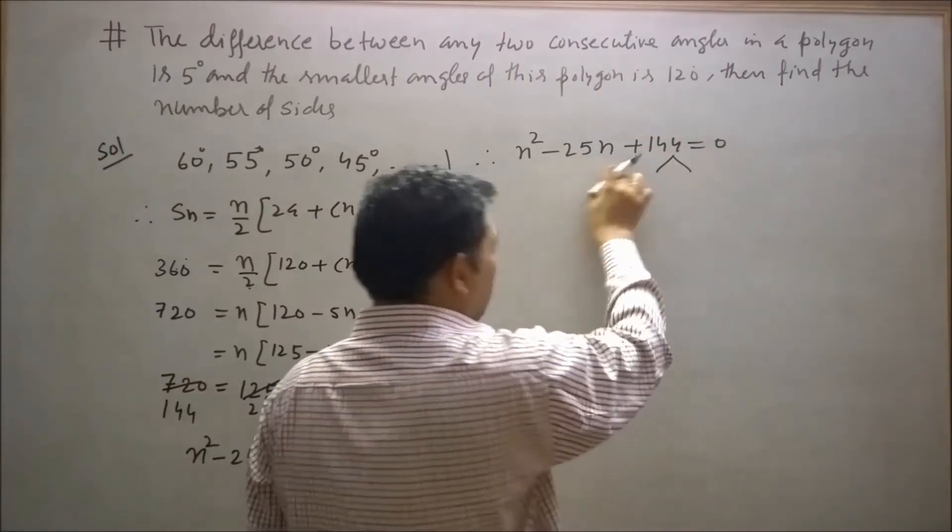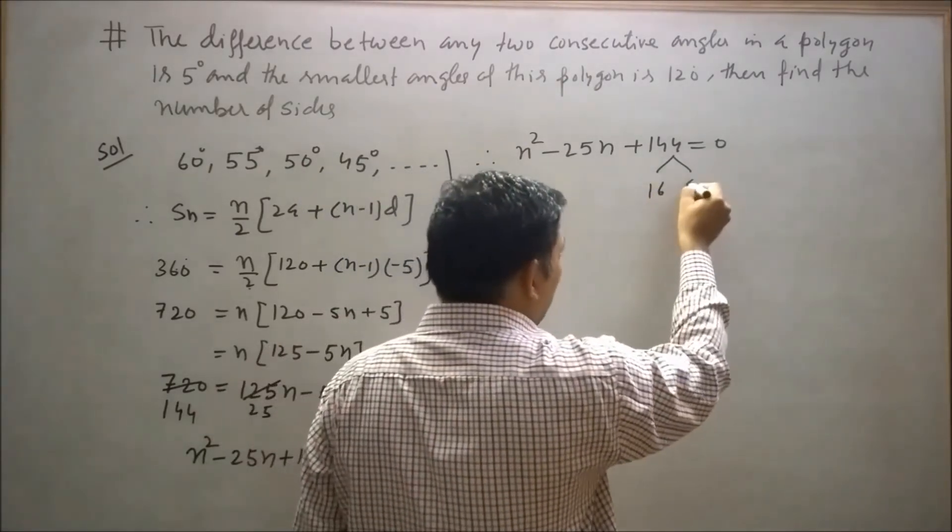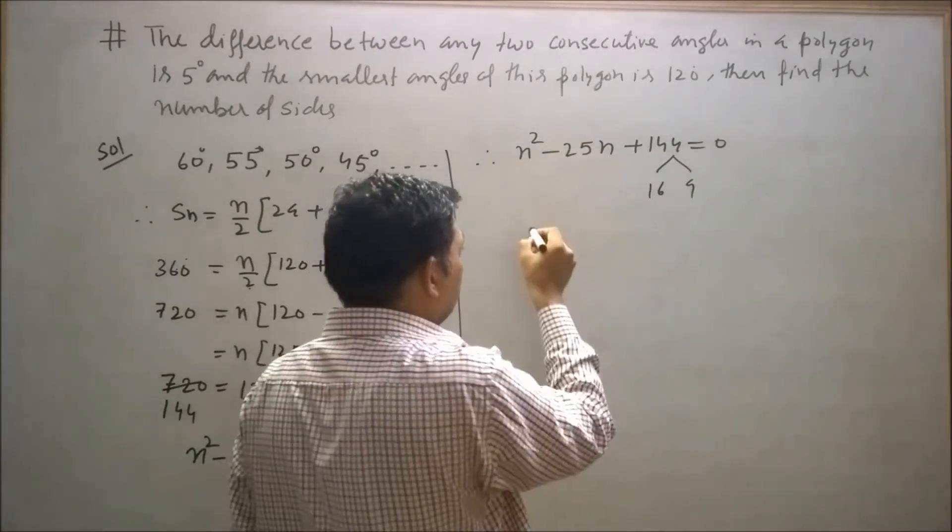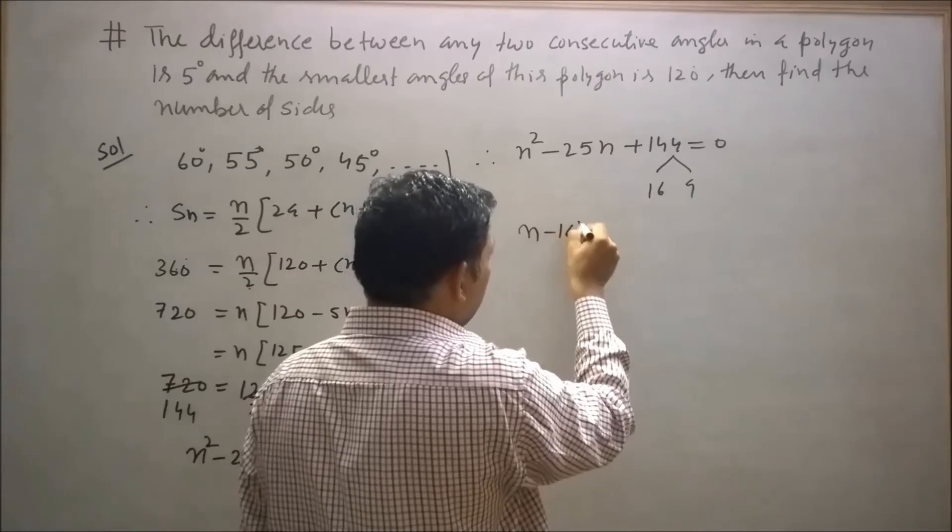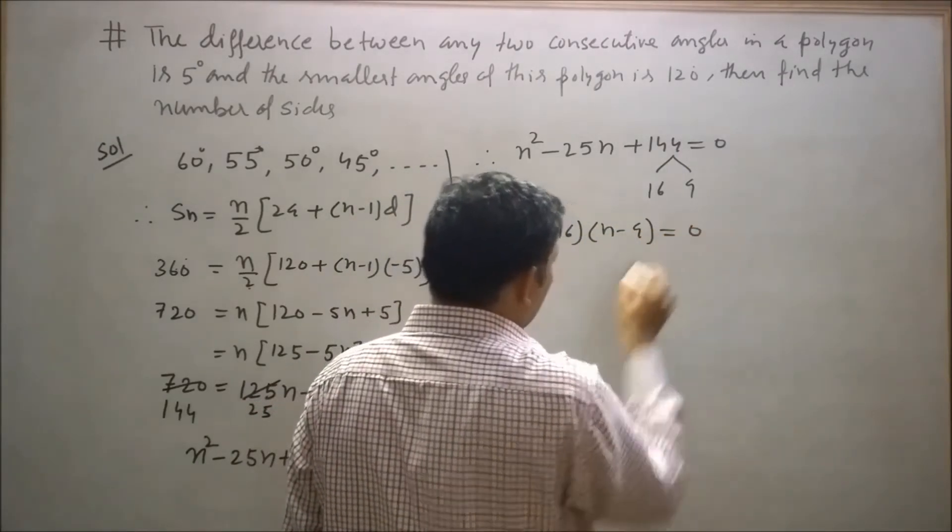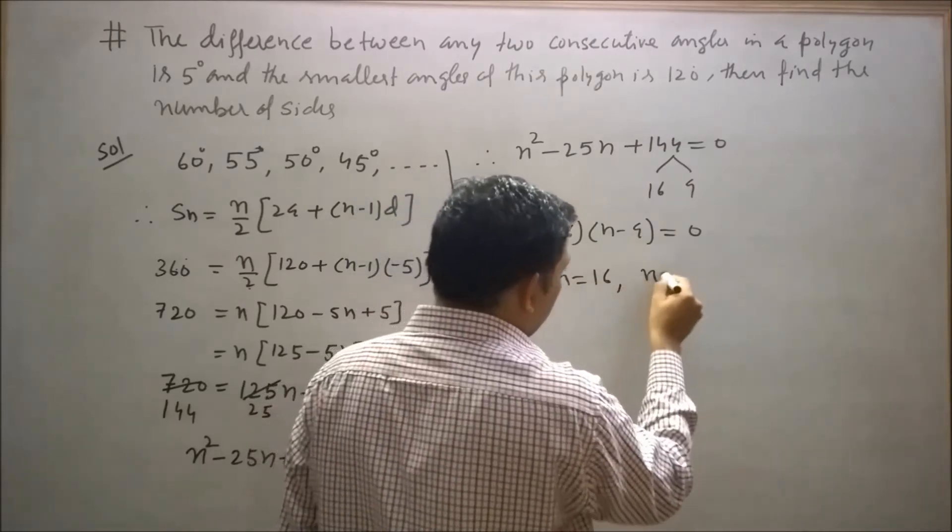Now factorize this equation. 16 + 9 = 25, and 16 × 9 = 144. So the factors are (n - 16)(n - 9) = 0. Therefore n = 16 or n = 9.